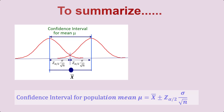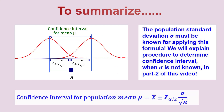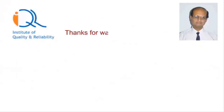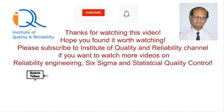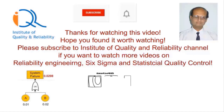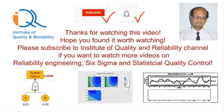To summarize, confidence interval for population mean mu is equal to sample average x bar plus or minus z alpha by 2 into sigma by square root n. Please note that the population standard deviation sigma must be known for applying this formula. We will explain the procedure to determine confidence interval when sigma is not known in Part 2 of this video. Thanks for watching. Please subscribe to Institute of Quality and Reliability channel if you want to watch more videos on Reliability Engineering, Six Sigma, and Statistical Quality Control.